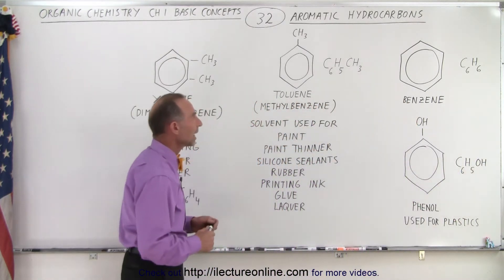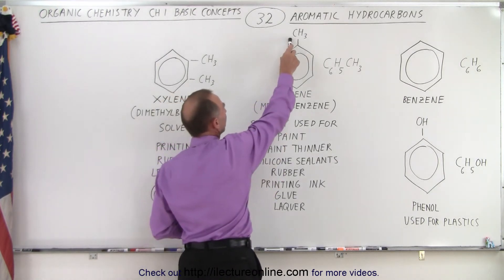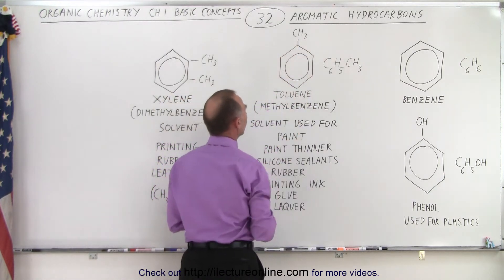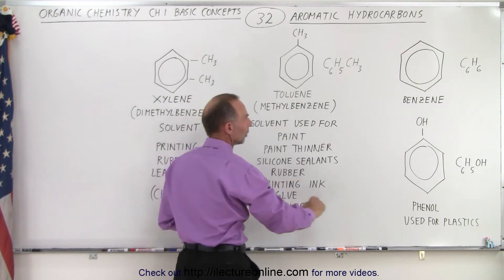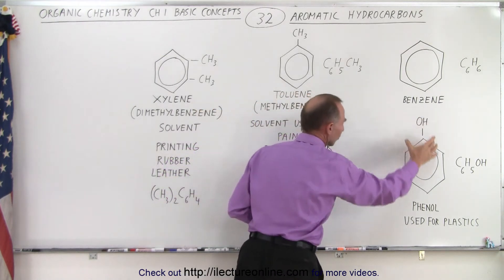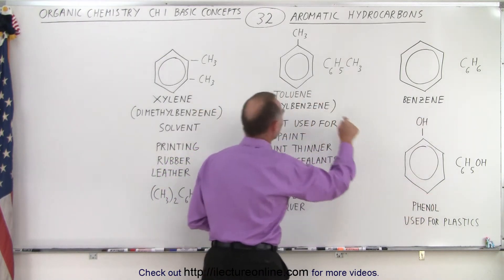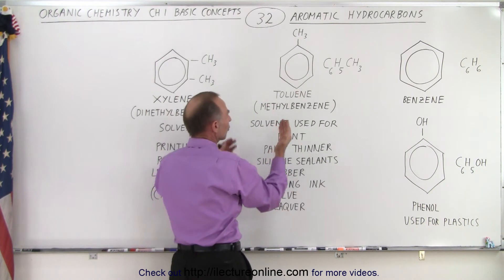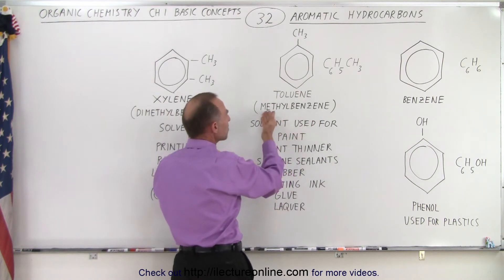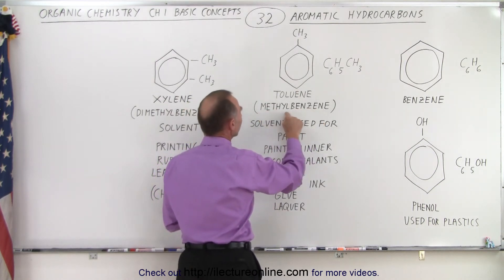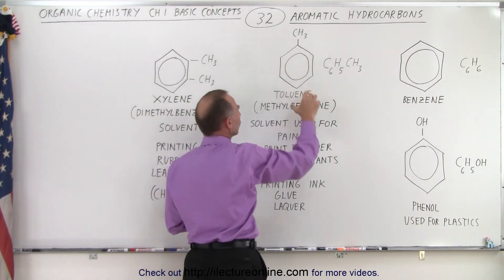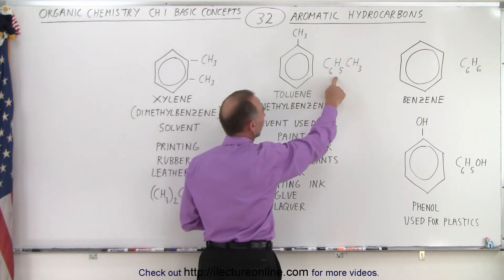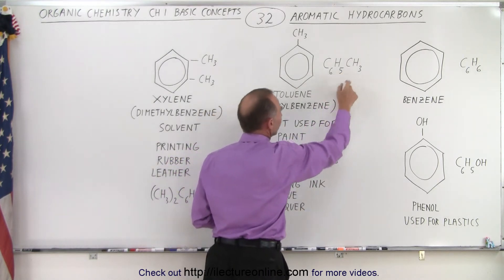Then if we take the hydrogen and replace it with a methyl group, it's called toluene. So with OH it's called phenol; with the methyl group we call it toluene. The proper name would be methylbenzene — the methyl addition to the benzene ring. And there we write C6H5CH3.